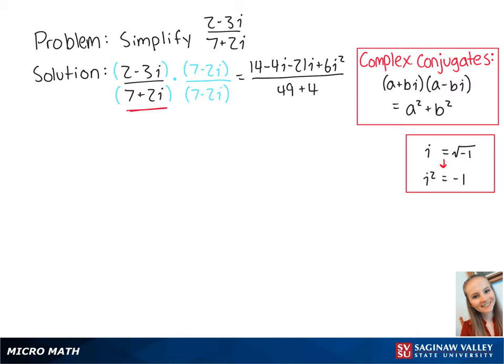Since i squared always equals negative 1, the term 6i squared equals 6 times negative 1, which equals negative 6.